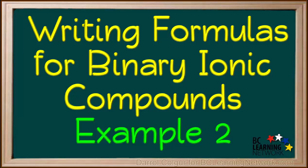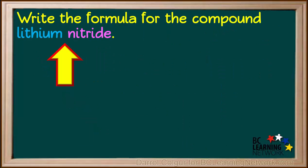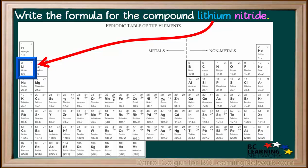Here is another example of writing the formula for an ionic compound. We are asked to write the formula for the compound lithium nitride. We find lithium on the periodic table. It is a metal and its ion is Li with a positive 1 charge.